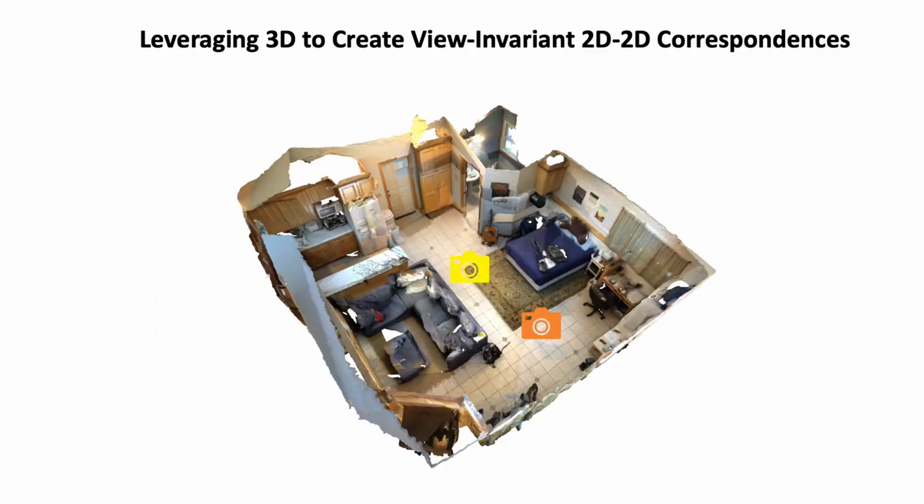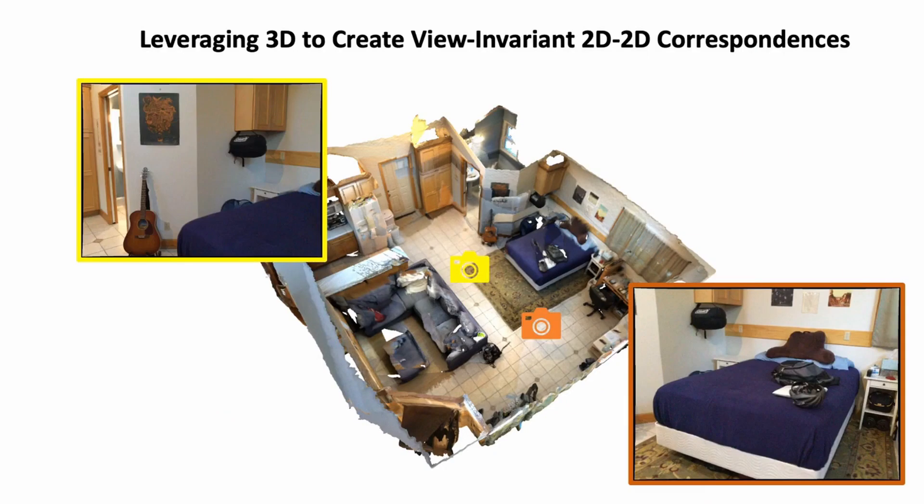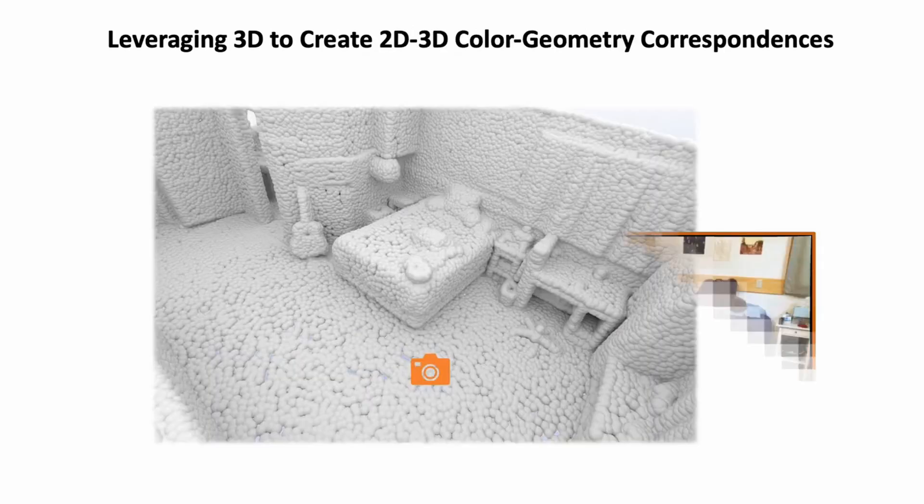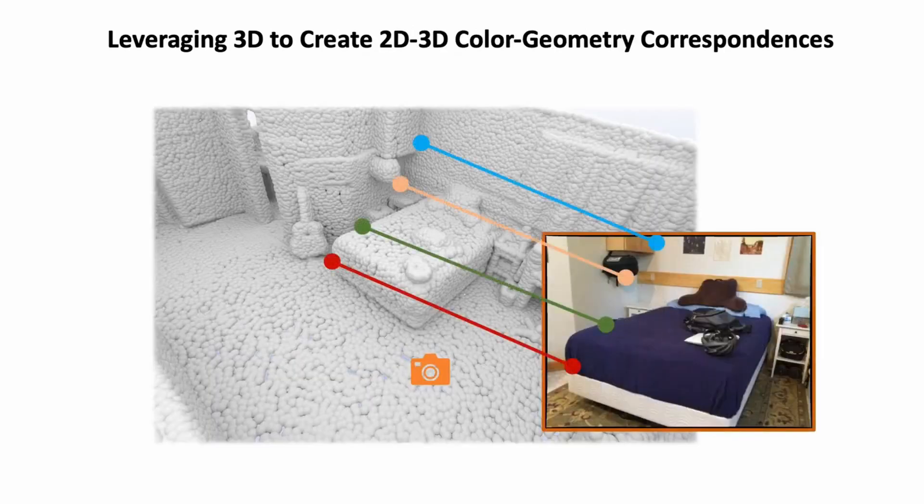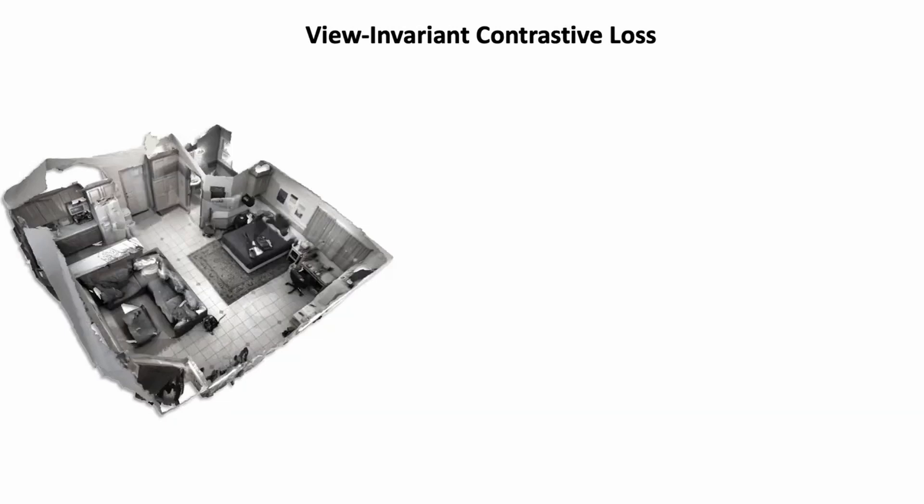We leverage RGB-D data from ScanNet to obtain view-invariant image-to-image correspondences. From a 3D scene, we associate image pixels which see the same 3D locations, although their surrounding image regions might look different due to different views or lighting. The 3D data also provides, by nature, image geometry correspondence.